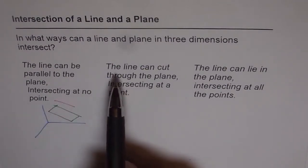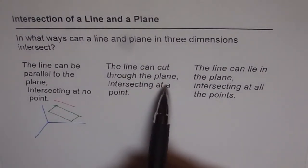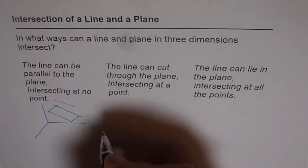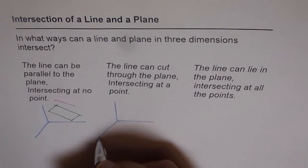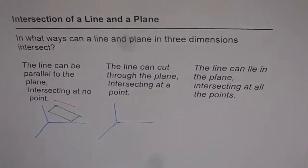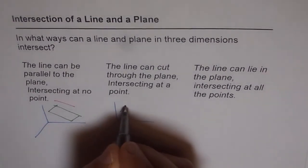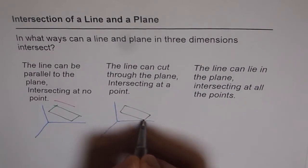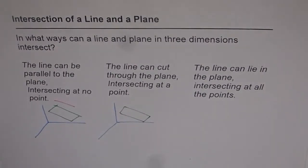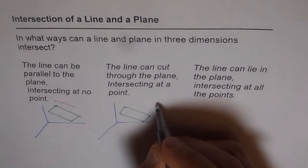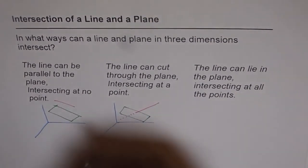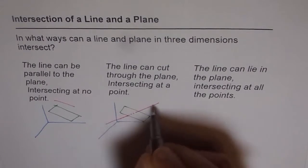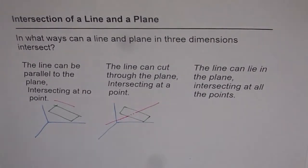The second case could be a line can cut through the plane, intersecting at a point. Like, let's say we again draw this 3D space and let me sketch a plane again here like a parallelogram, which looks more like a rectangle in this case, and let's say there is a line coming here so it intersects and just passes through the plane. Do you see that? So this line actually intersects at a point. So that is the second case.